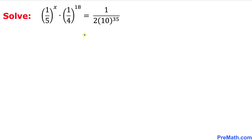In this tutorial we are going to solve this given rational exponential equation. Here's our problem: 1 over 5 power x times 1 fourth power 18 equals 1 over 2 times 10 power 35. Now we are going to solve for x, so let's get started.